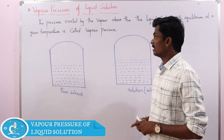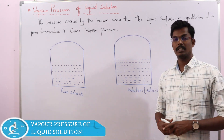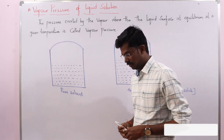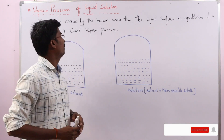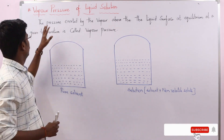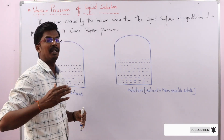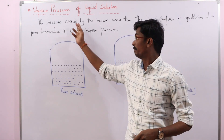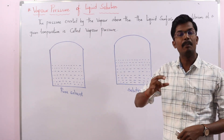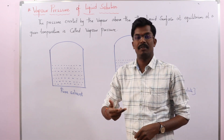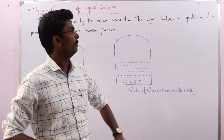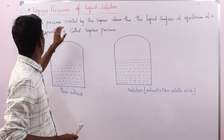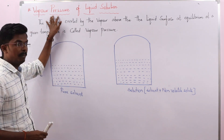Hello friends, in this lecture I am going to explain vapour pressure of liquid solution. We can simply define that vapour pressure is nothing but the pressure exerted by the vapour above the liquid surface at equilibrium at a given temperature — we simply call it vapour pressure.